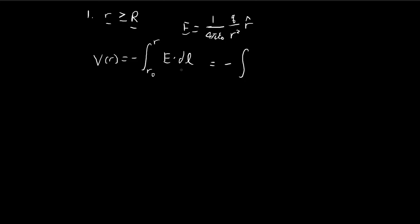Because of this, dL is going to have several components: dr, dθ, and dφ, because we're using spherical coordinates. Since the electric field is only dependent on r, we can get rid of the θ and φ terms and keep only the r terms. So the integral runs from infinity as our reference point all the way to r.